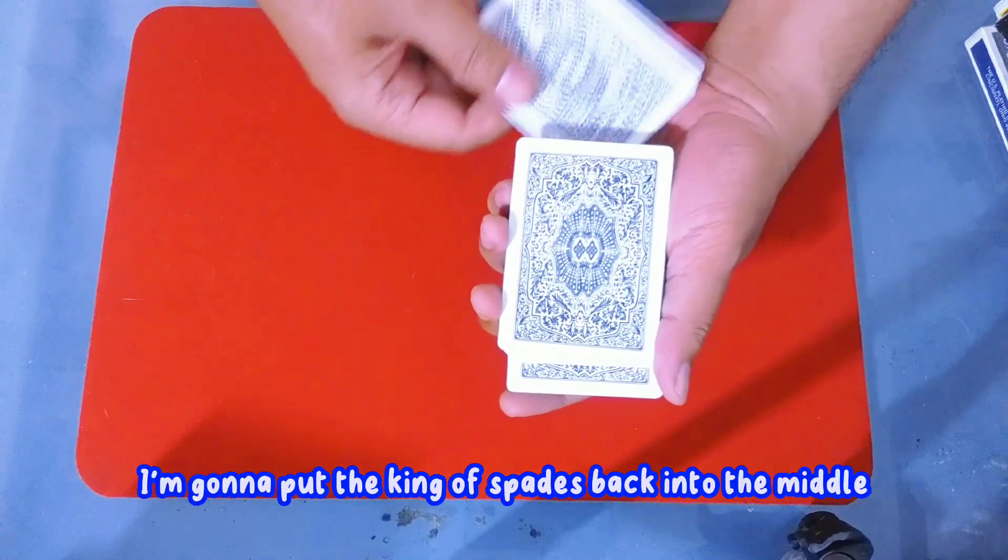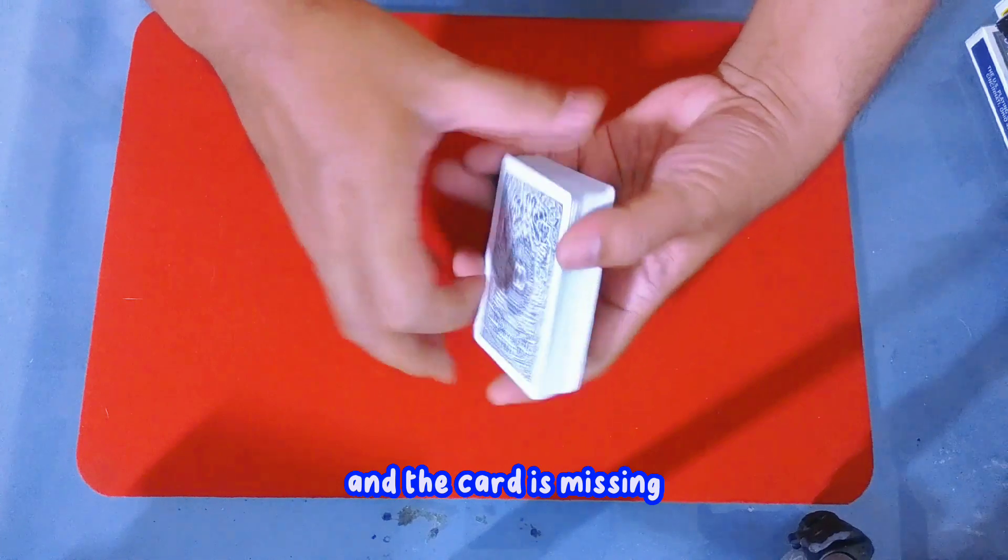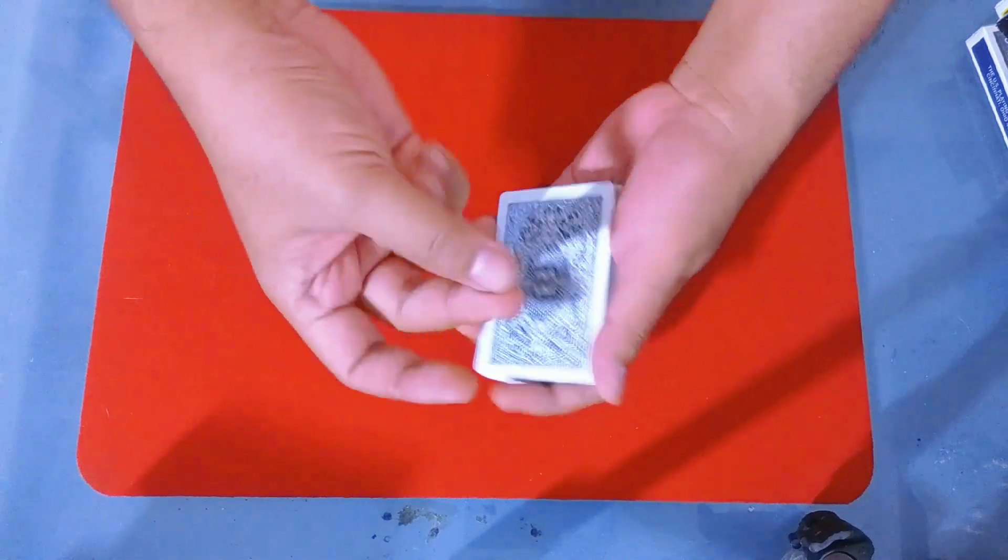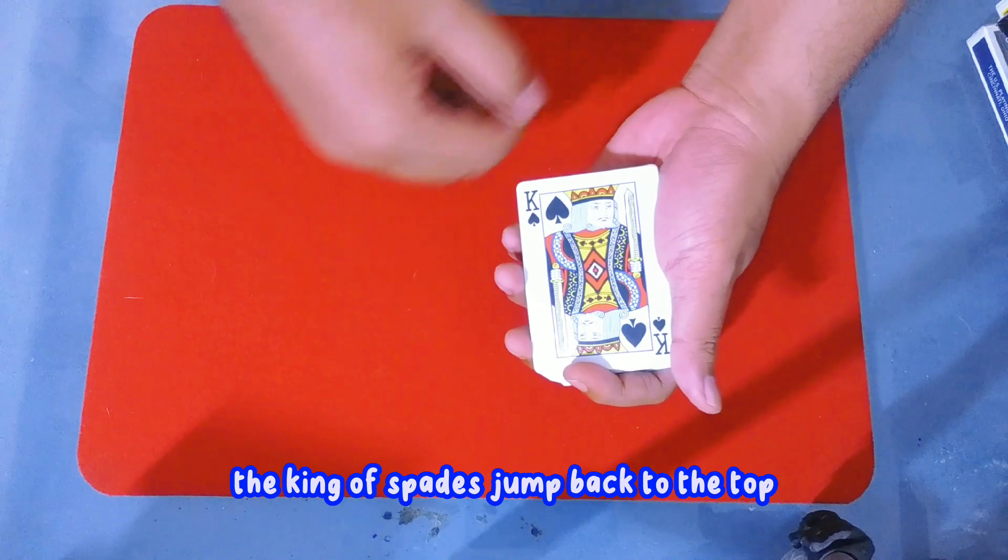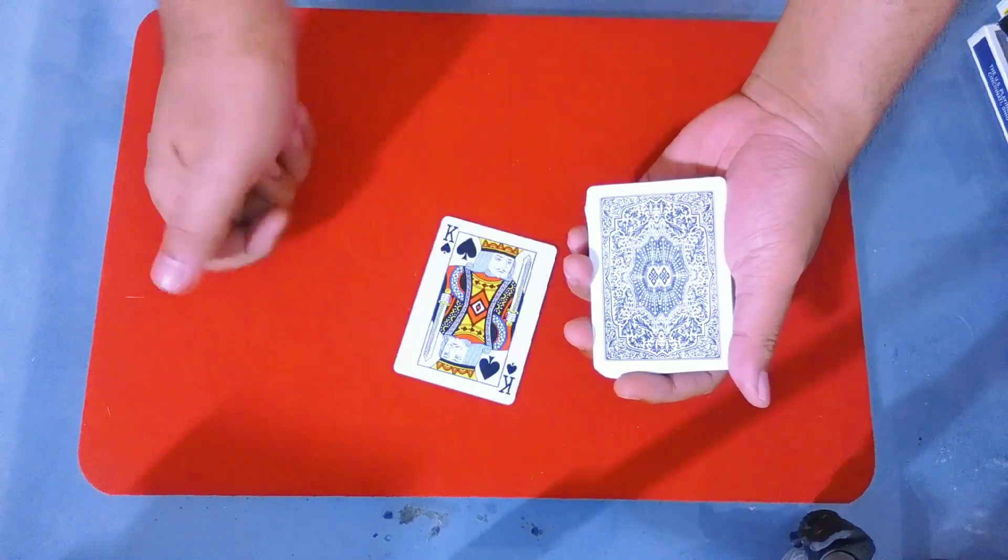I'm gonna put the king of spades back into the middle just like that and the card is missing. But if I snap my finger like this, the king of spades jumps back to the top.